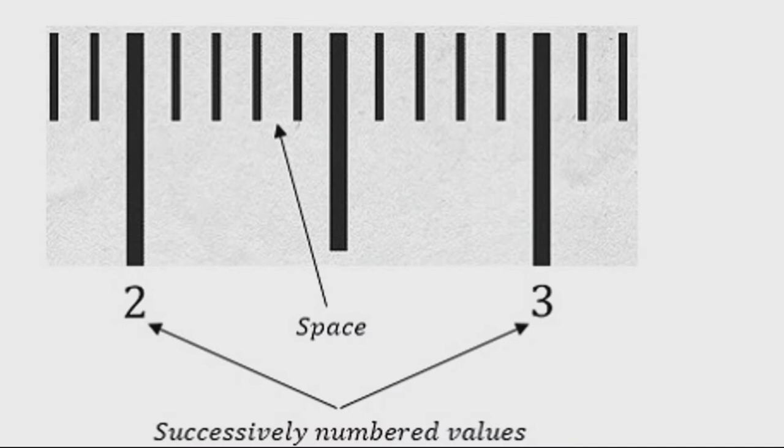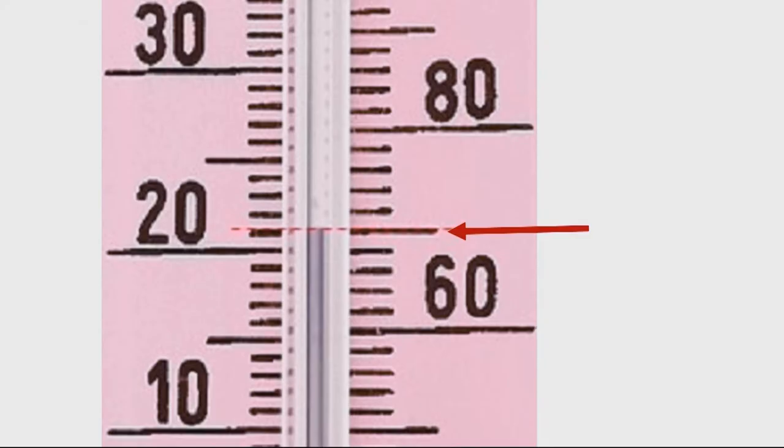Now, all the scales have got successive numbers and they have got spaces. For example, in the one which is shown on your screen, between two and three, there are ten spaces. Therefore, you have to know what is the value of each space. Three minus two is one. One divided by ten is decimal one. Therefore, each small space is 0.1.